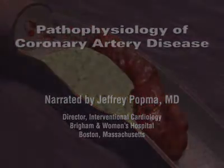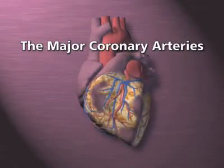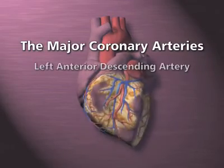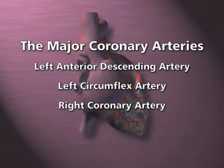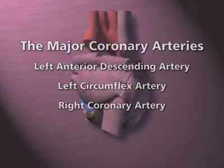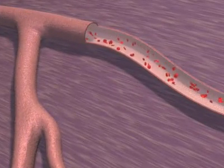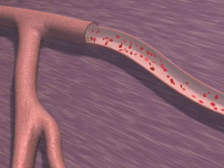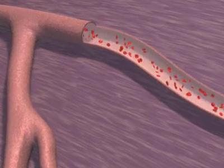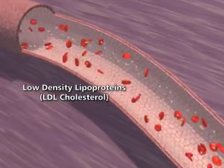The heart is fed by its own circulation known as the major coronary arteries. These arteries include the left anterior descending artery, the left circumflex coronary artery, and the right coronary artery. The bloodstream contains red blood cells which deliver oxygen to the heart muscle known as the myocardium. It also contains fats or lipids known as low-density lipoproteins, or LDL cholesterol.